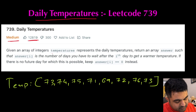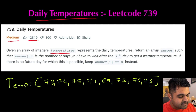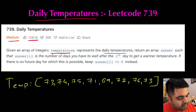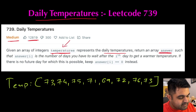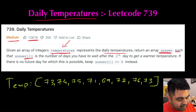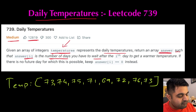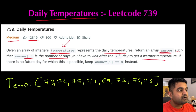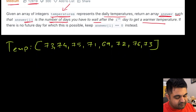The problem statement is quite simple. We are given an integer array called temperatures that represents the daily temperature over a certain span period. We need to return a new answer array such that any particular item in that answers array should define how many number of days you have to wait in order to get a warmer temperature compared to that particular day's temperature.